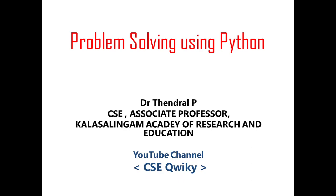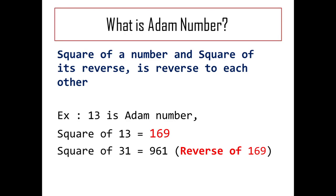In this video we're going to see how to find whether a number is an atom number or not. First we have to understand what an atom number is. If you have a number and want to find whether it's an atom number, you just have to square the number and take the reverse of the number and square it. If the number squared and its reverse squared are reversed to each other, then we say that number is an atom number.